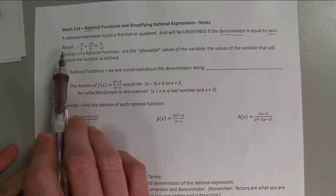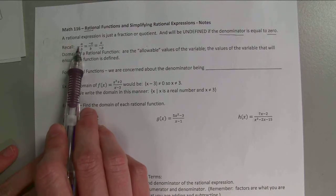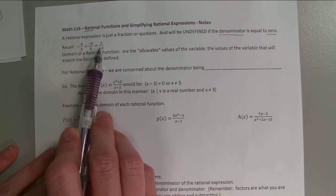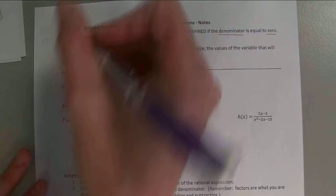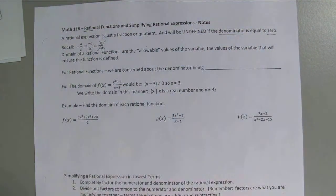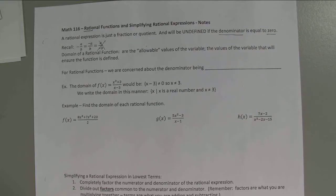Another reminder: when you have a negative, that negative can be in front of the fraction, on top, or on bottom — but they're all the same. It's just one negative; it doesn't matter where it goes. Typically I keep the negative out in front or on top, and not worry about it on the bottom, especially when we get into adding and subtracting fractions with common denominators.